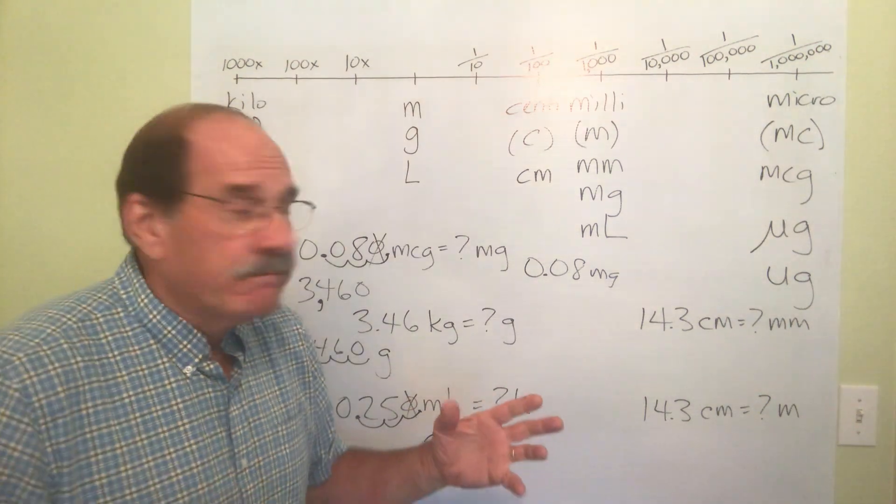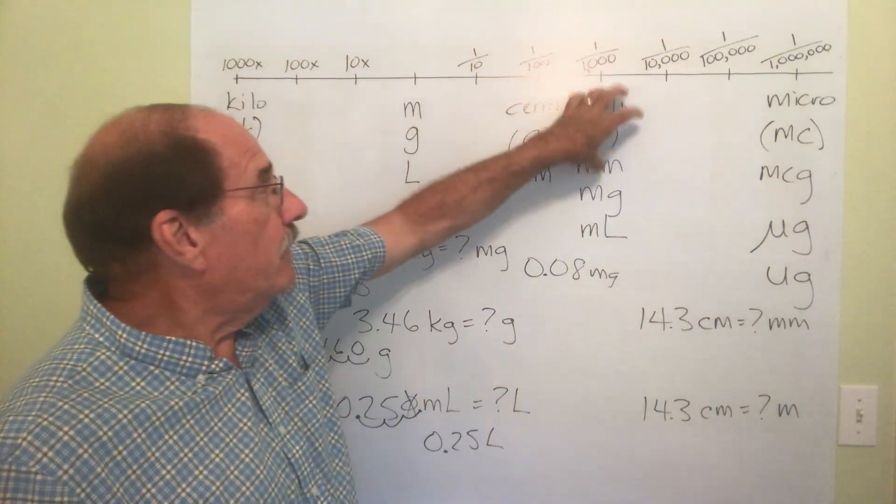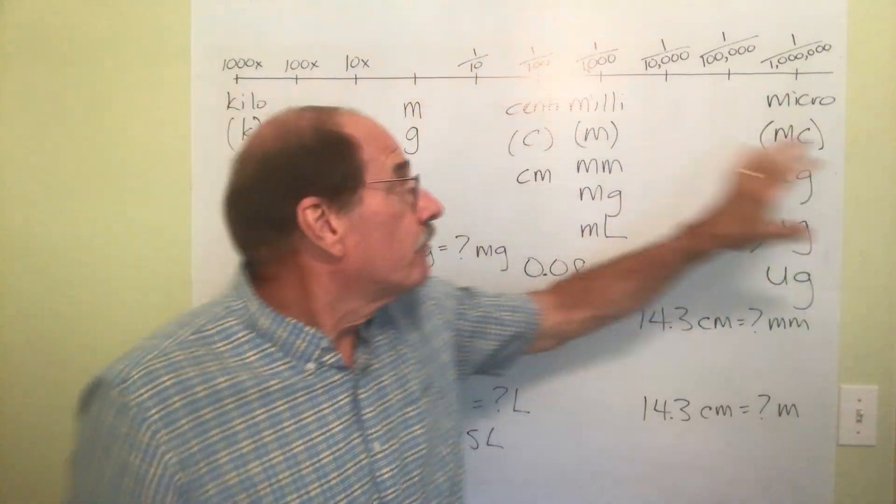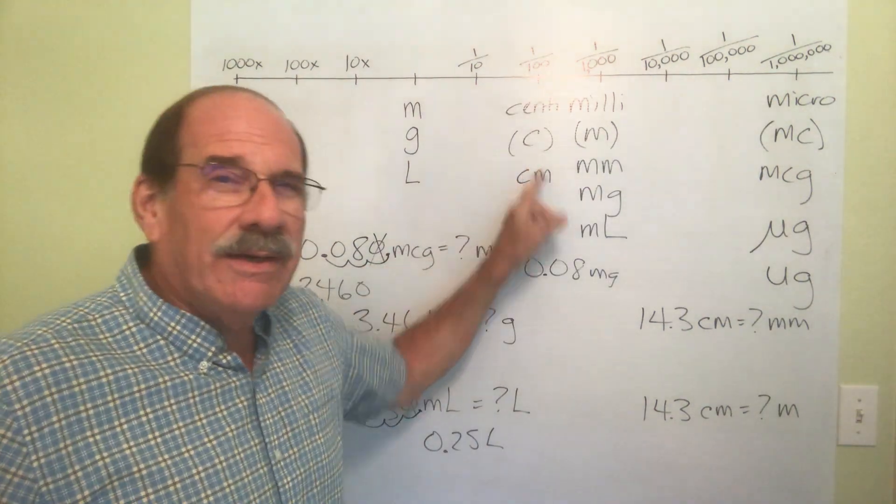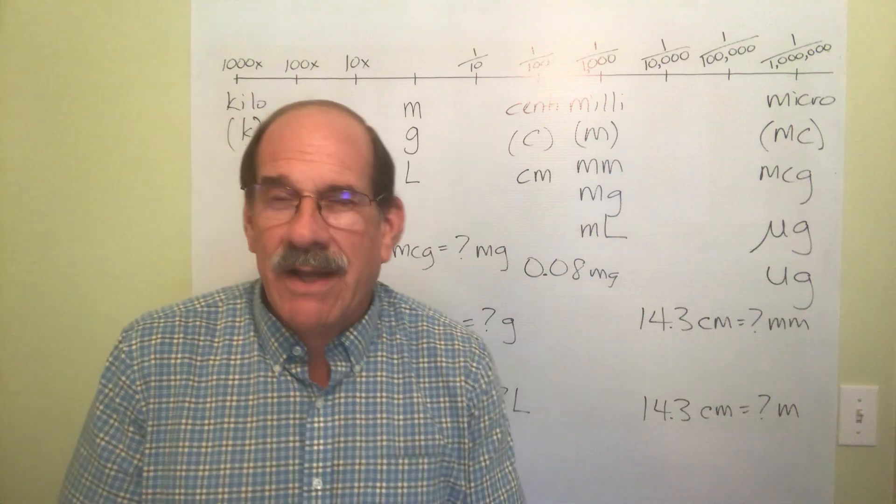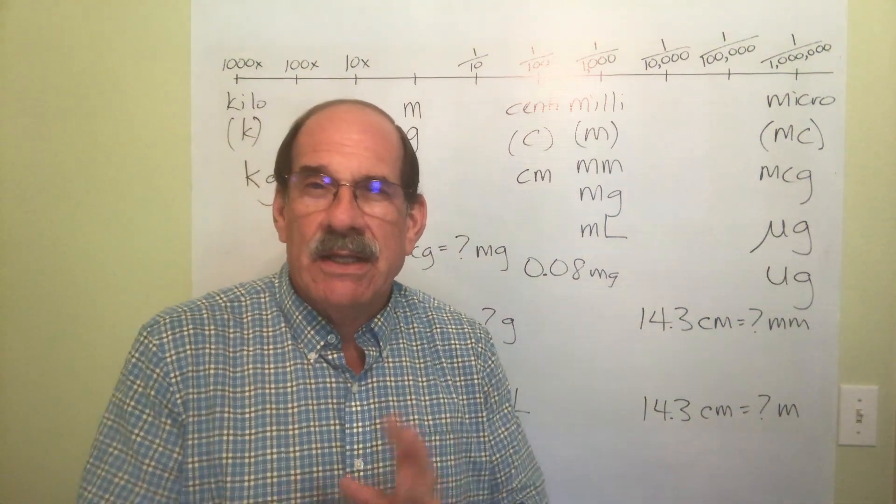Now notice everything you've done so far. The kilo things, the main ones, the milli things, and the micro. Ignore this one. They're all 3, 3, 3. Here's the oddball. Bless his little heart. He's kind of weird. He doesn't go 3, 3, 3. He's kind of stuck in the middle there.